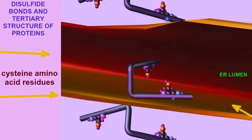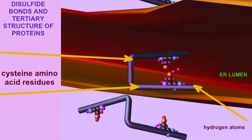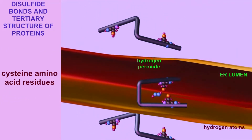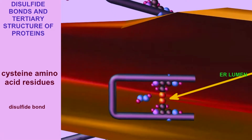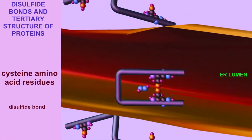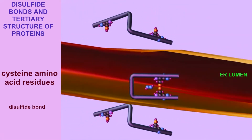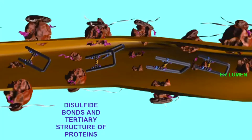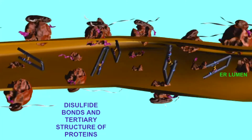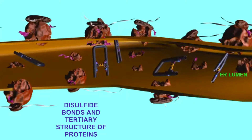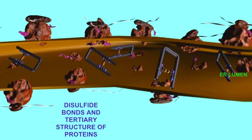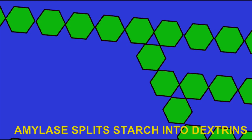The shape of a protein, and thus enzymes, which are proteins, can be changed by changes in heat, or in the acidity level, or in the presence of heavy metals, or other environmental factors.